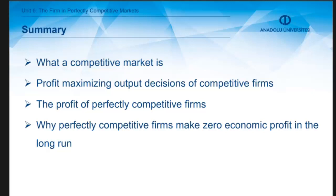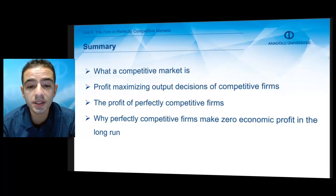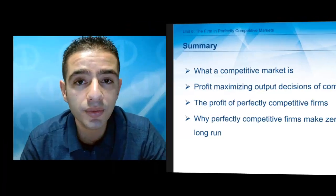Of course, this session was just a summary of Unit 6. We touched upon what a competitive market is, learned about profit maximizing output decisions of competitive firms, understood the profit of perfectly competitive firms, and identified the main reason why perfectly competitive firms make zero profit in the long run. It will be a better idea to go over Unit 6 on the firm in perfectly competitive markets for a better and deeper understanding.